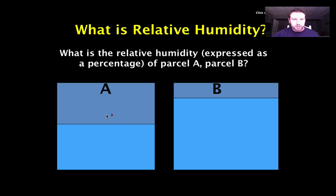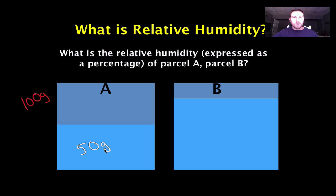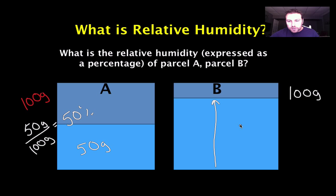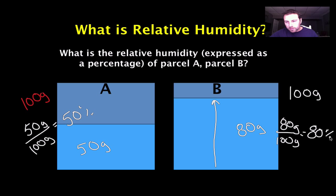Relative humidity is the percentage of water vapor in the air. Looking at Parcel A — say it's 100 grams — the dark blue area represents our water. If we have 50 grams of water in this 100-gram parcel, that gives us 50 over 100, which equals 50%. On Parcel B, the parcel is still 100 grams, but the dark blue region has increased to about 80 grams of water. So 80 over 100 gives us 80%. Parcel B is filled with more water, so the relative humidity goes up.